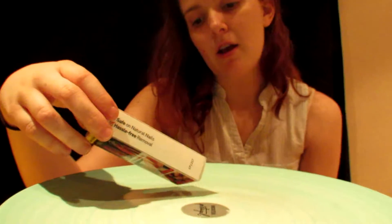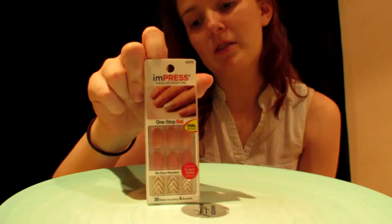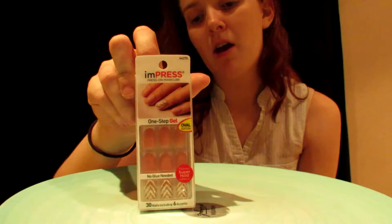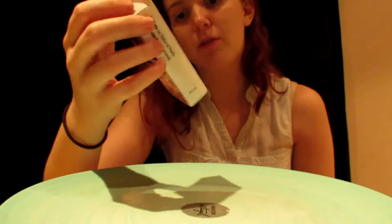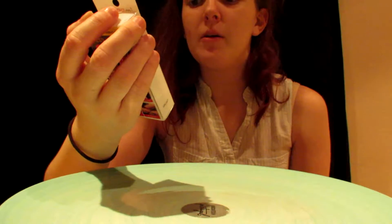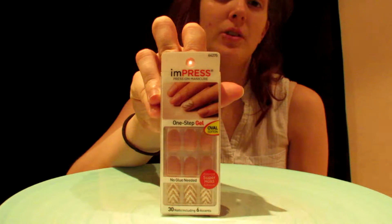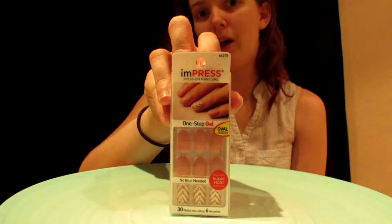It says that no glue is needed with oval edition. I don't really care too much for flat edges or squared off ends, however you want to call it. This little pack says that it has 30 nails with 6 accents. You want to do a little singular flare color. I try to go with something a little more neutral looking as a first try.